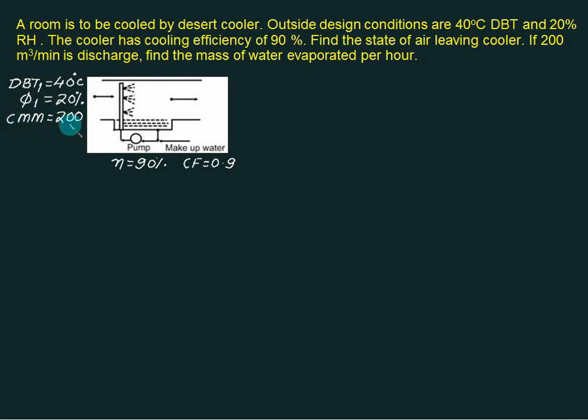So what we do is that we will look at point number 1 first. On the psychrometric chart we can look at point number 1 first using phi equal to 20% and dry bulb equal to 40. Let's say this point is 1.